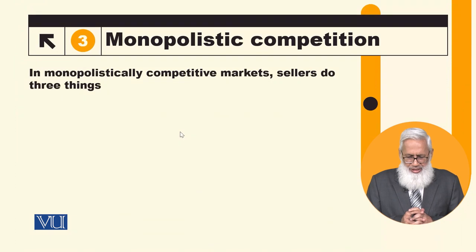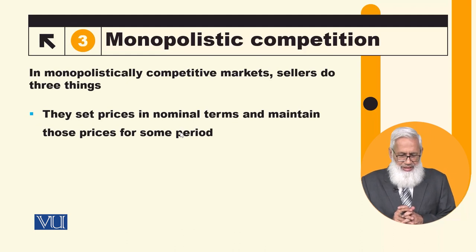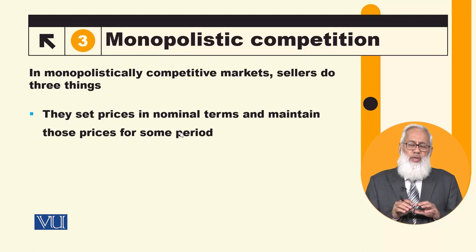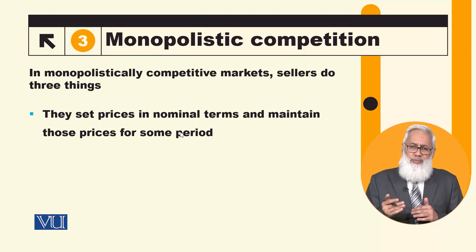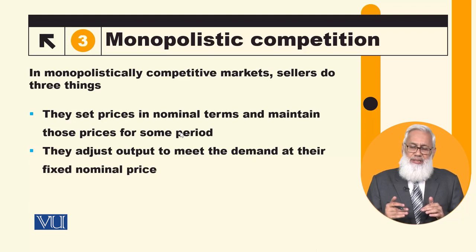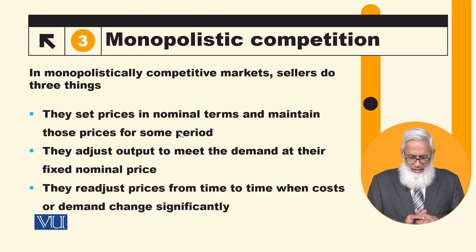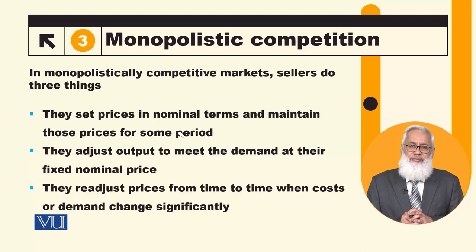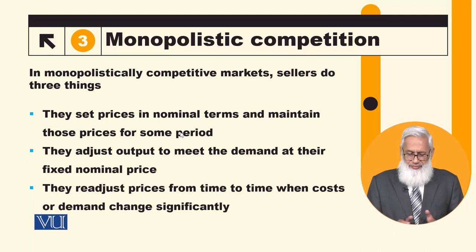In monopolistically competitive markets, sellers do three things: they set prices in nominal terms and maintain those prices for some period; if there is a decrease in demand, they adjust output to meet demand at their fixed nominal price; and they re-adjust prices from time to time only when costs and demand change significantly. For marginal changes, they maintain the price.